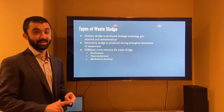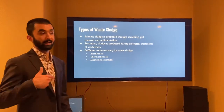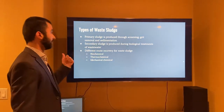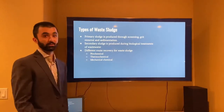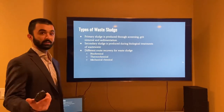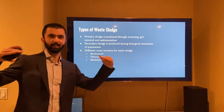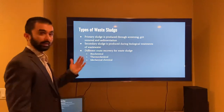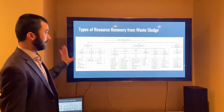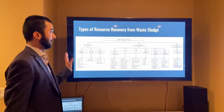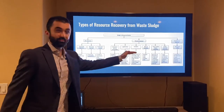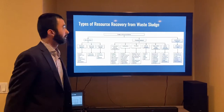There are two main types of waste sludge. Primary sludge is produced through preliminary wastewater treatment steps consisting of straining, grit removal, and sedimentation. Secondary sludge is produced during the biological treatment of wastewater. There are three routes used for recovery from waste sludge: biochemical, thermochemical, and mechanical-chemical. A chart highlights these routes at the top, with their respective methods and the products that result from each.